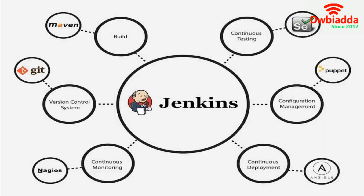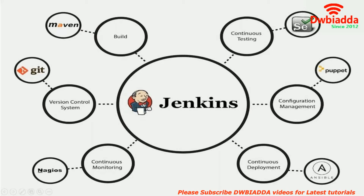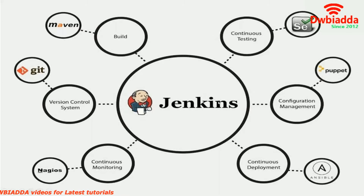Here you can see the basic infrastructure of Jenkins, which can grow more complex with the addition of each tool. For building, we use the Maven tool; for version control and storing code, we use Git. For continuous monitoring, we use Nagios; for continuous deployment, we use Ansible. Configuration management is handled by Puppet, and for continuous testing scripts, we use the Selenium tool. All these tools are integrated with Jenkins, making it a powerful application for software automation.